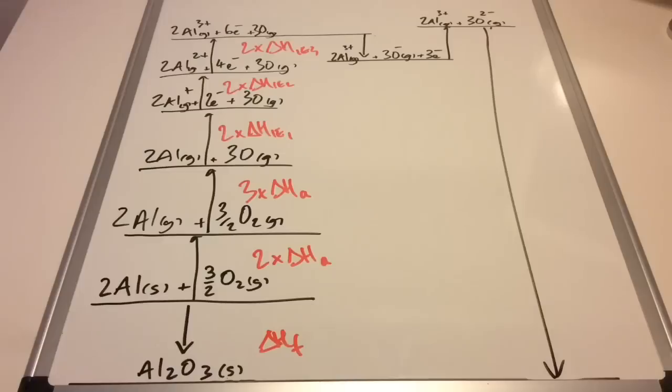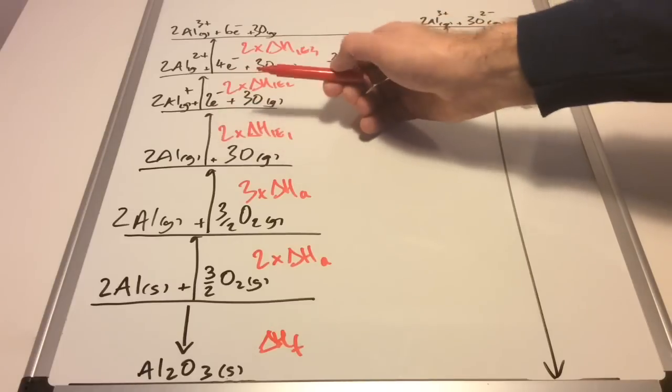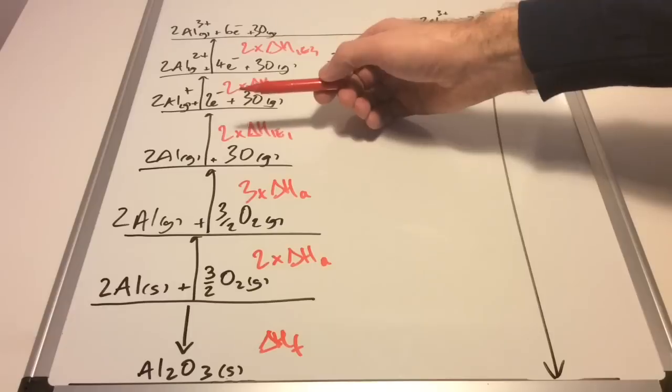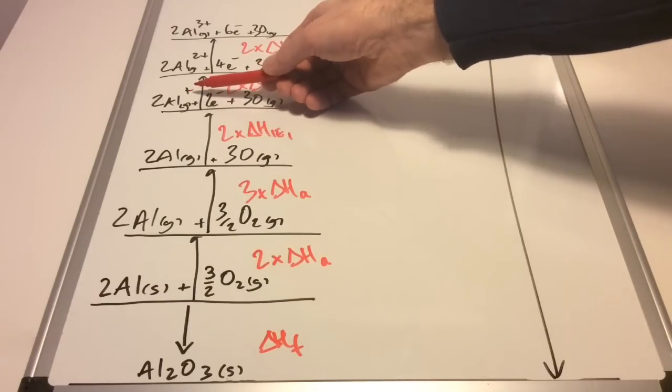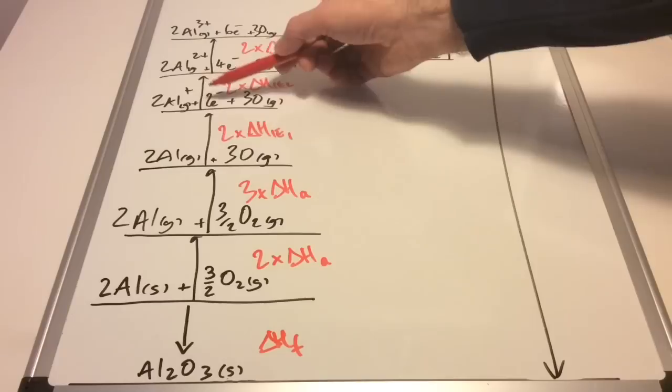The thing to remember is the electrons. If we look at the first ionization energy here, what we're doing is we're removing one electron from each atom in a mole of atoms to form the gaseous 1+ ions.